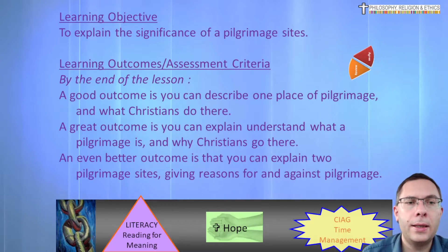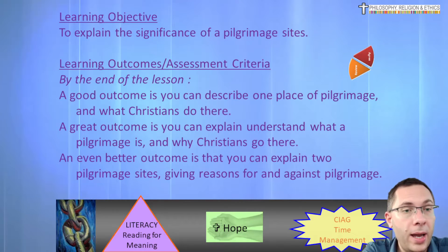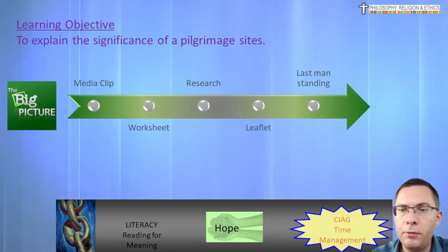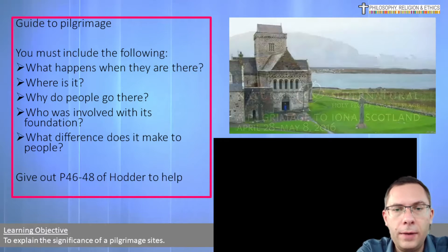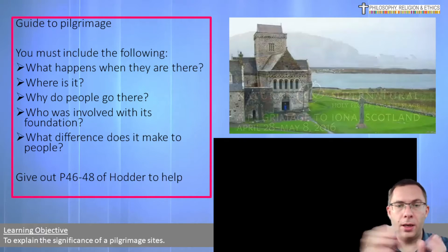Okay, so we said that we would explain the significance of pilgrimage sites, and we also said that it would be good if we could describe one place of pilgrimage. We've done our great outcome explaining what a pilgrimage is and why Christians may choose to go there. So we're going to now look at a little bit of research on this, and then you're going to be creating a leaflet. You are going to create a guide to a pilgrimage — ideally a full paper folded in half where you can put information about both Iona and Lourdes.